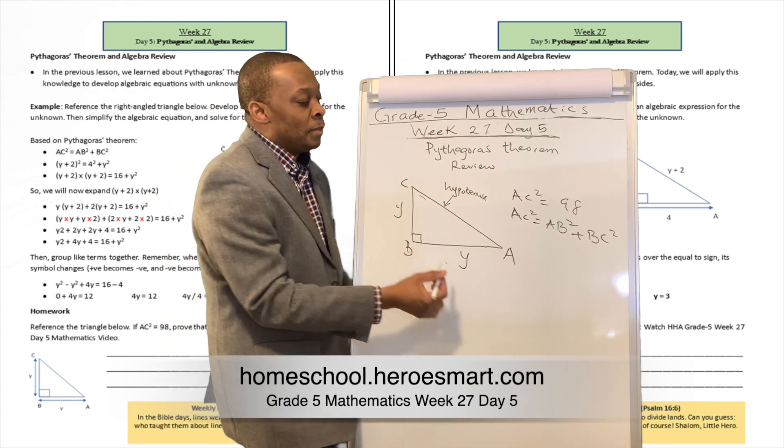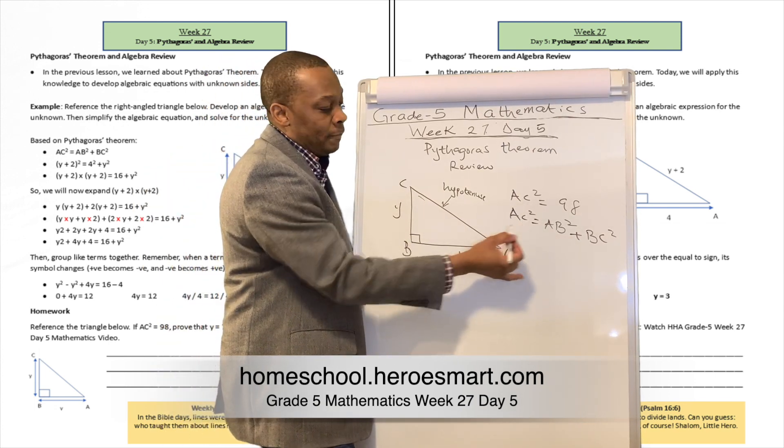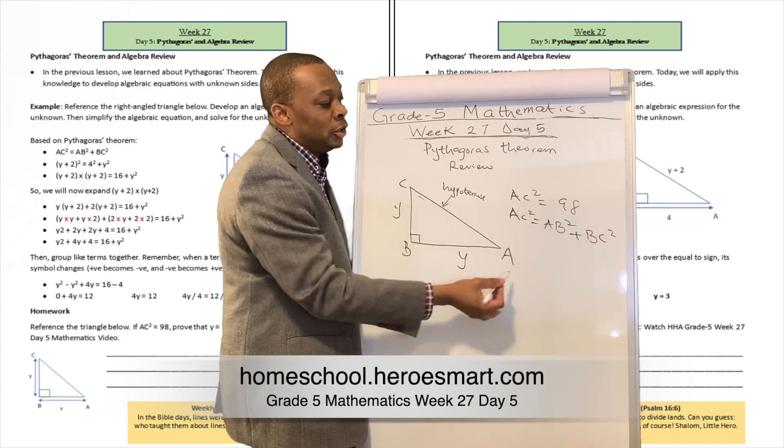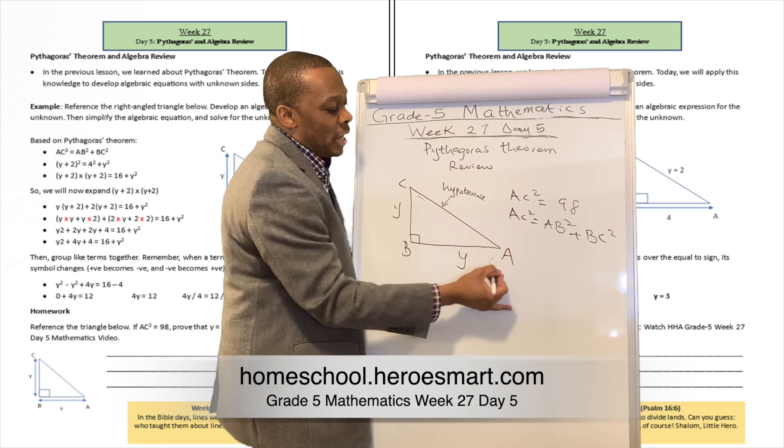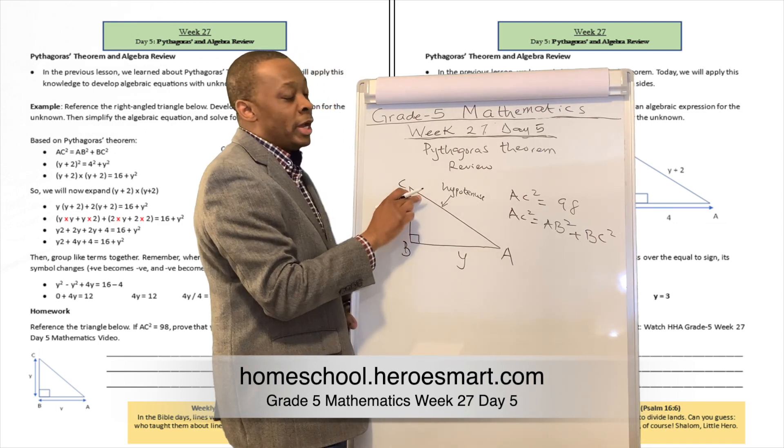What's that formula? That formula is AC squared, which is the hypotenuse in this situation. It's going to be equivalent to AB squared plus BC squared.